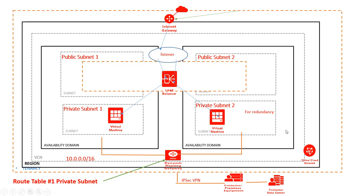This is how the infrastructure generally looks like. You've got the internet gateway, you've got the listener, you've got a load balancer which is on the public subnet. Traffic is ingress here to the load balancer and the load balancer distributes the traffic to the private web server. Generally you've got internet gateway, a virtual cloud network, and a dynamic gateway to connect to your virtual cloud from your on-site data center through IPSec VPN, your customer premises equipment and your data center. This is how an infrastructure looks like.